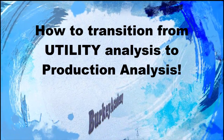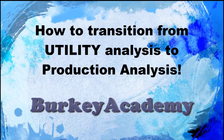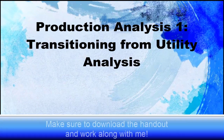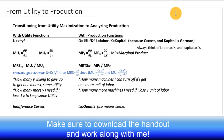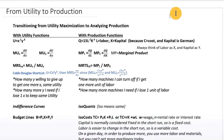Since we've already covered utility analysis, where we're doing a constrained optimization trying to make utility as big as possible with limited resources — meaning our budget — we're now going to transition into looking at production analysis and cost analysis. A lot of the pieces we've been talking about with maximizing utility, utility functions, and indifference curves are going to transition nicely into production functions, although some of the terminology will be a little bit different.